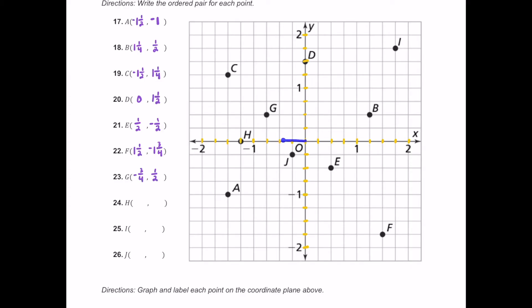For H, it looks like we're just moving left one and a quarter — so negative one and one fourth — and then don't move up or down at all. You're just staying on the x-axis, so we put zero for the up and down part. The ordered pair is negative one and one quarter comma zero.